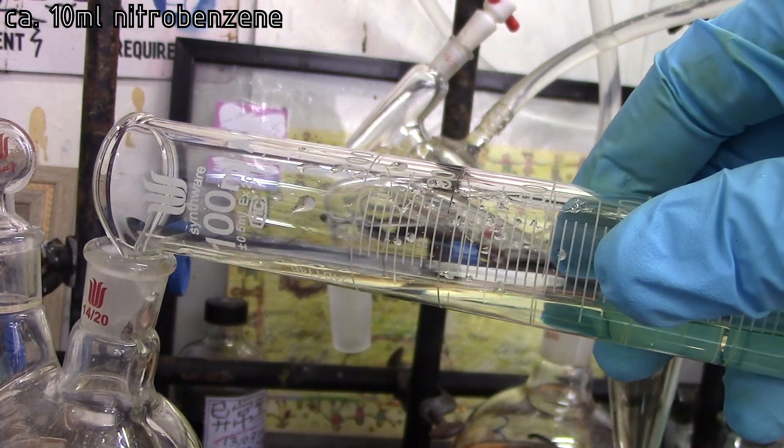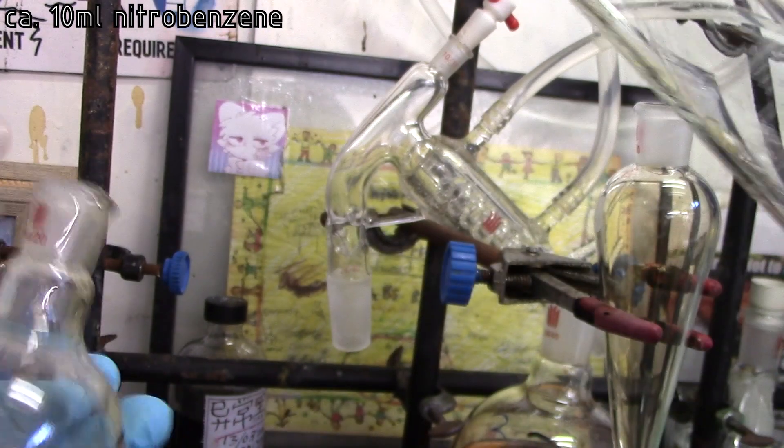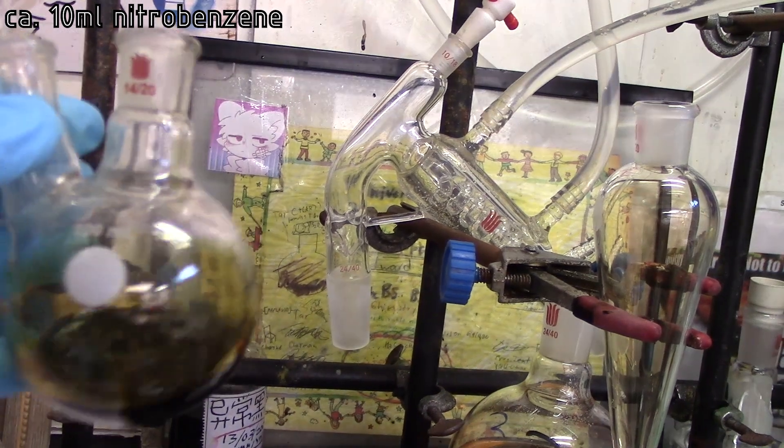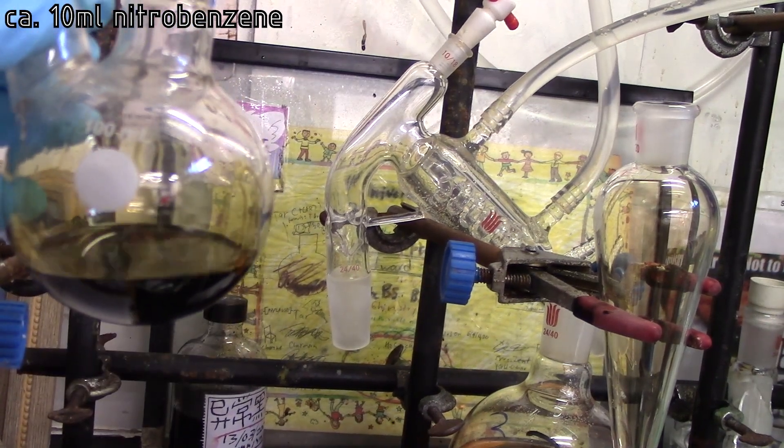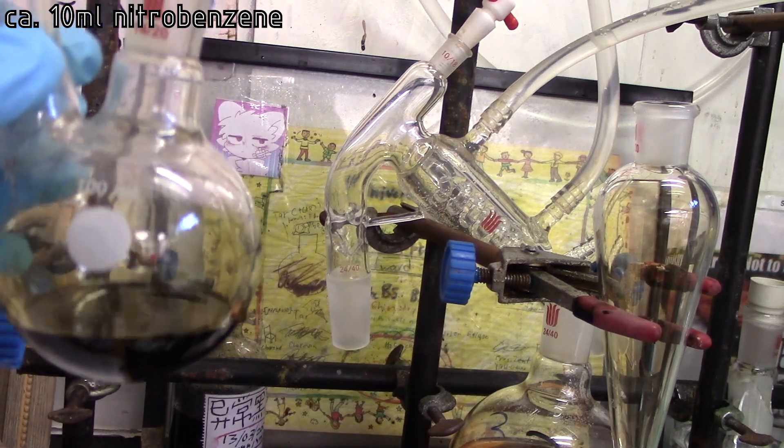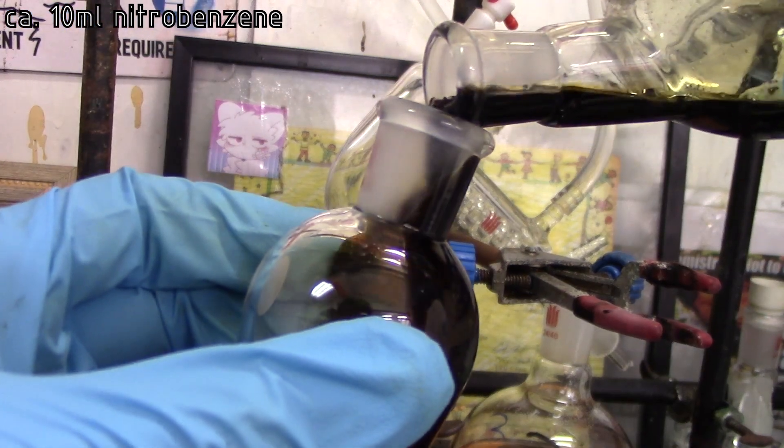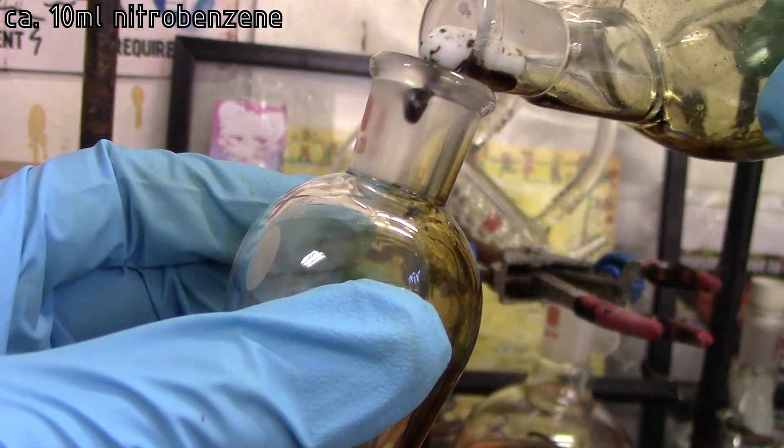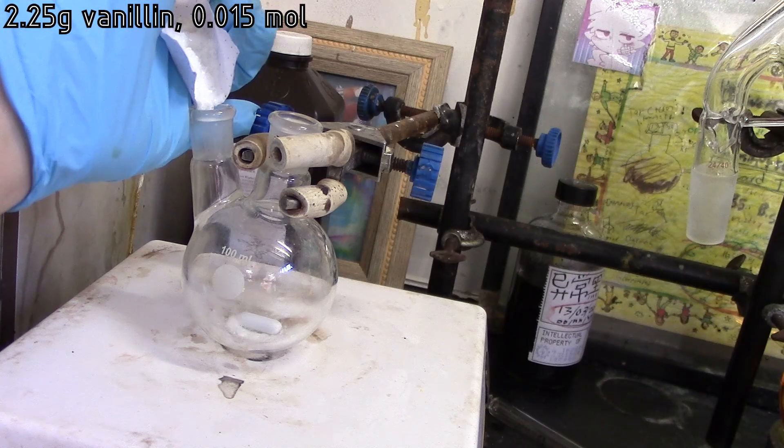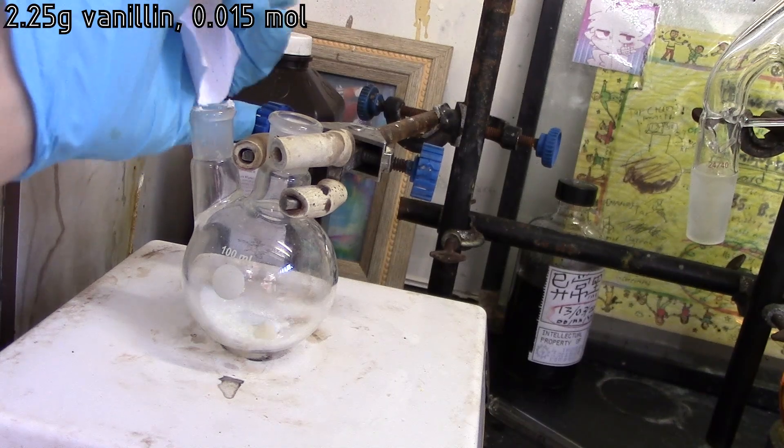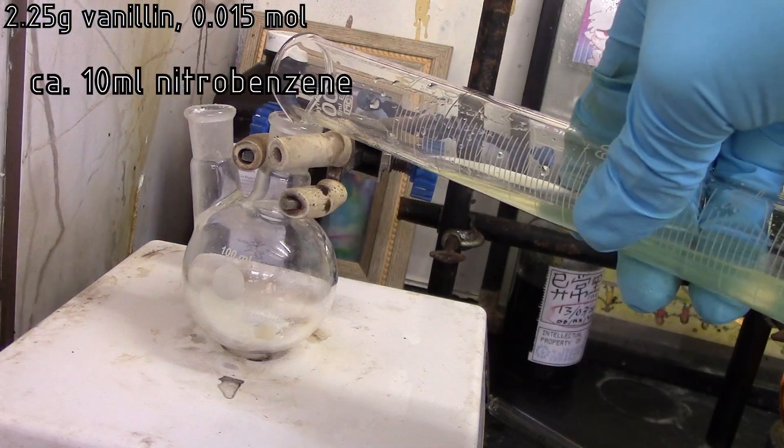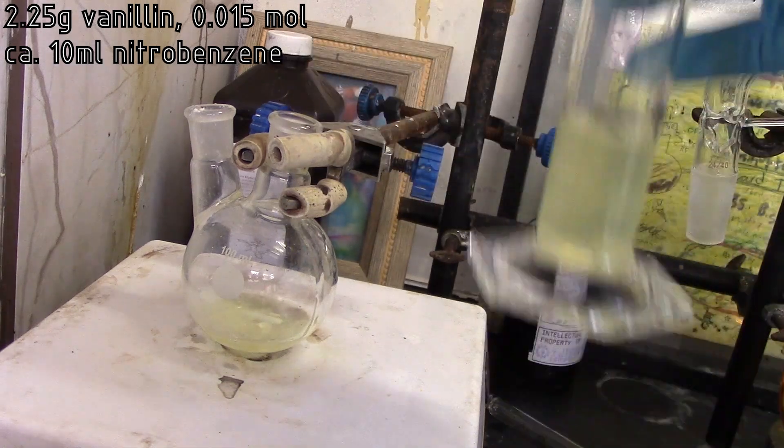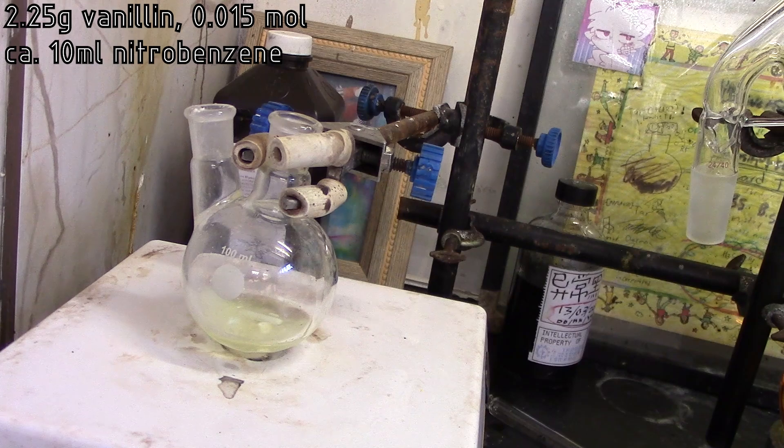So now we'll add approximately 10 milliliters of nitrobenzene, and surprisingly it dissolves. I did not expect that to happen. But I assume it's forming a complex of sorts. So now we have this solution of tar, and that will be placed into the addition funnel once again. And you can see there's some leftover magnesium sulfate that really should not matter. Anyways, we'll add 2.25 grams of vanillin into 10 milliliters of nitrobenzene and let it dissolve by just stirring it of course, obviously.